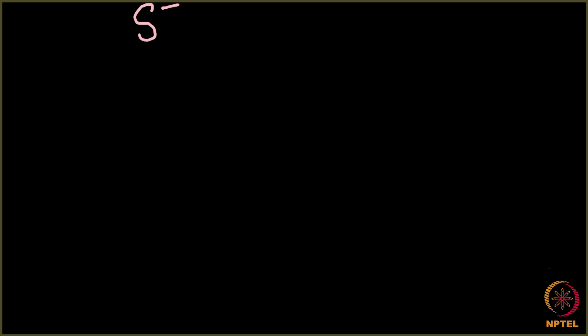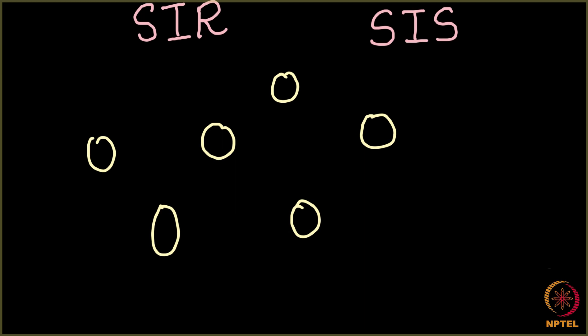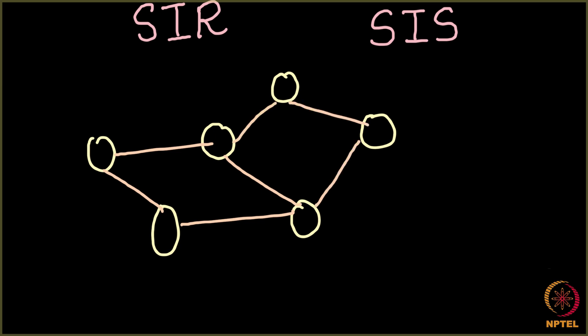Till now we have talked about two disease spreading models: the SIR model and the SIS model. In both of these models, we were given a network with certain nodes connected by edges, and these nodes were changing their colors — their phases — with time.